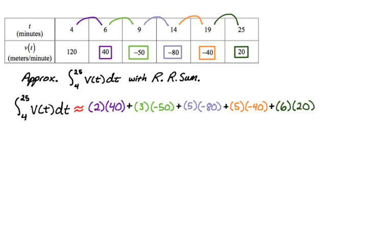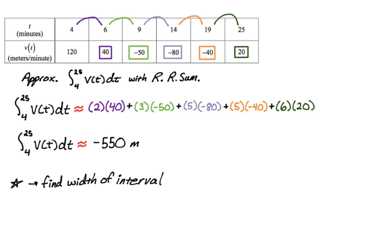Again, you could technically leave it there — you'd want units on your answer — but I'm going to simplify. I got that the definite integral from four to 25 of v of t dt is approximately negative 550, and the units should be meters, because integrating meters per minute over minutes gives meters. For a right Riemann sum: find the width of the interval, then take the value at the right endpoint.